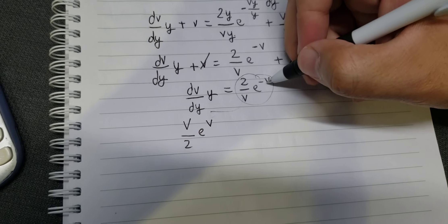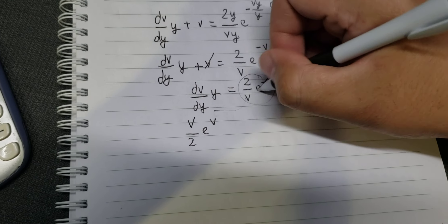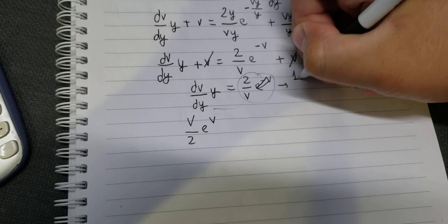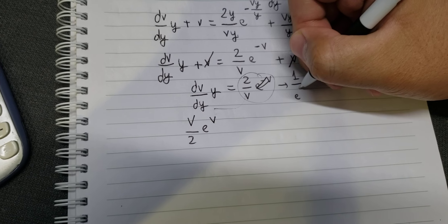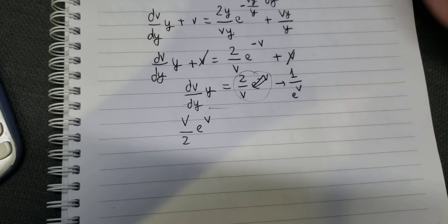This term is 1 over e to the power of v, so we can write it like this with dv and dy.